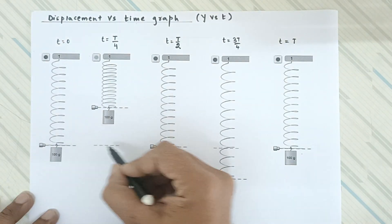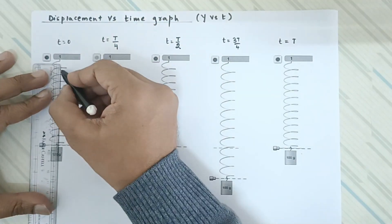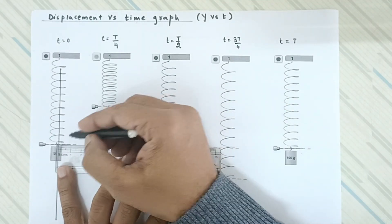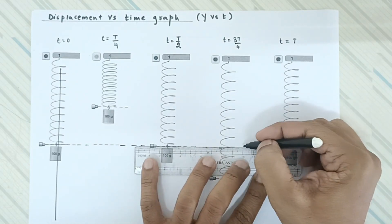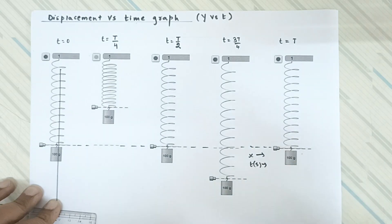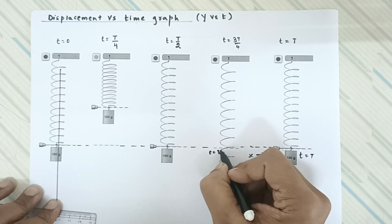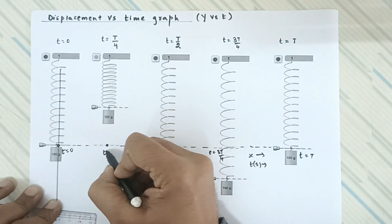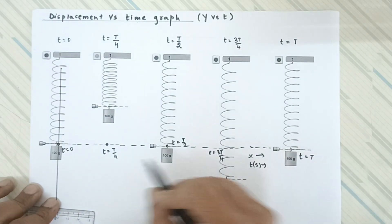The dotted line represents the mean position. I am going to plot the graph of displacement versus time. The y-axis is the displacement axis and the x-axis is the time axis. Time is an independent quantity so it must always be plotted on the x-axis. The time instances marked are: t = 0, t = T/4, t = T/2, t = 3T/4, and t = T.